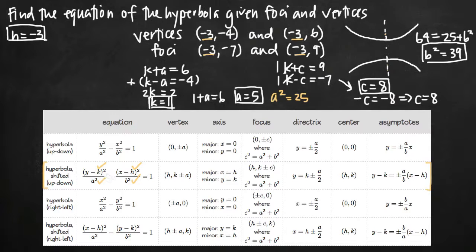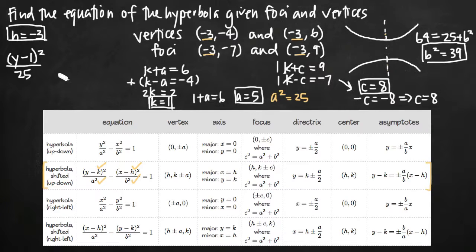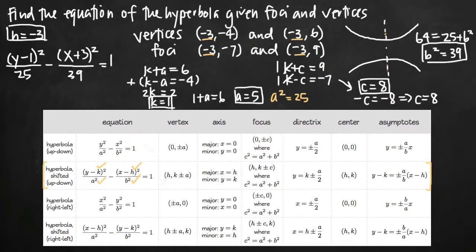We can now write the equation for the shifted hyperbola that opens up and down. It is: (y minus 1) squared over 25, minus (x plus 3) squared over 39, equals 1. That's the equation of the hyperbola, and that's how we find it using only the vertices and the foci.